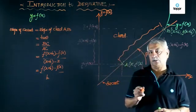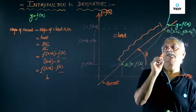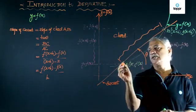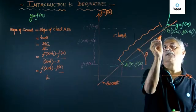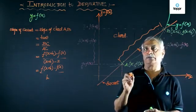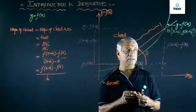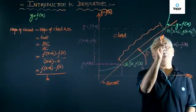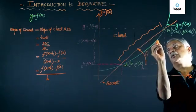Now, suppose I consider point B moving towards A, point B along the function f of x, that is the curve representing the function. Let us consider point B moves along the curve towards A.